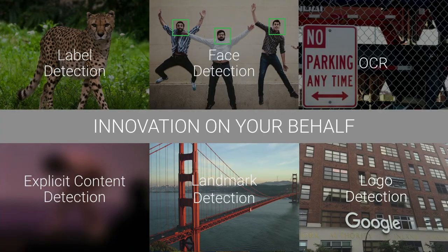And then the Vision API. This lets you do things like label detection — learning what's in an image — face detection, OCR, landmark and logo detection, and lots more. We've just put out a new release of the Vision API with a big set of updates to all of its features, including a much extended label vocabulary and an increase in model accuracy by more than 25%.